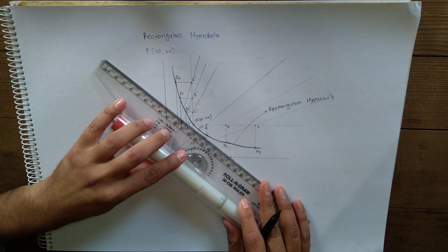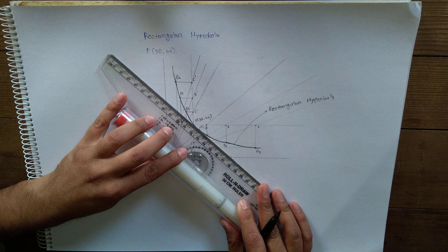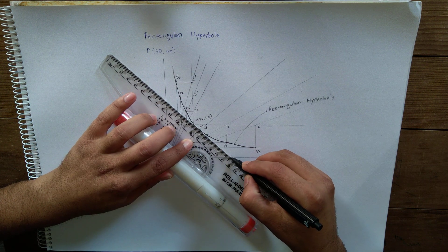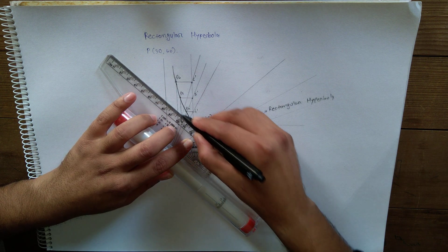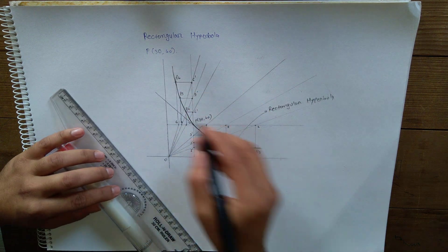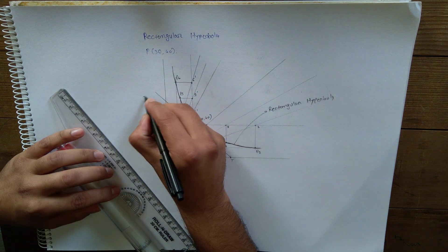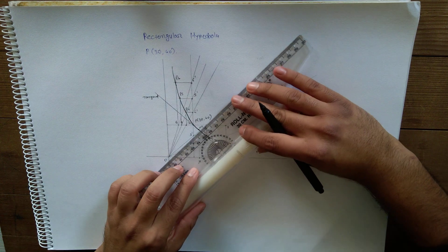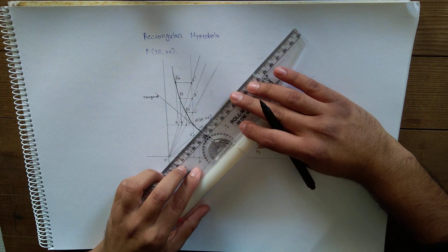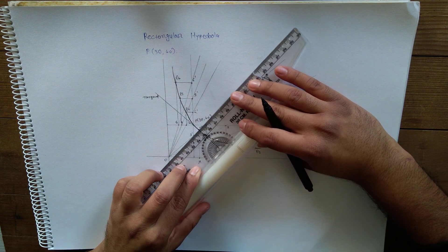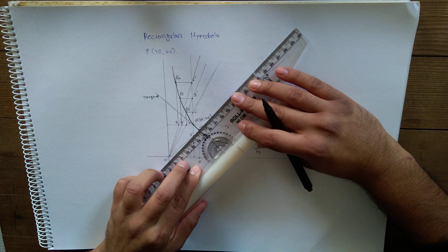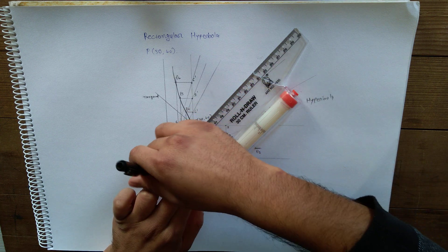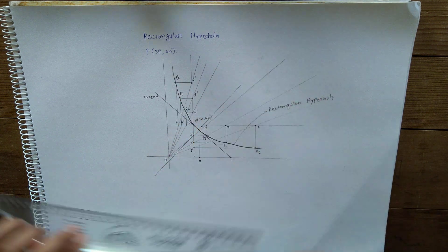Join T and M, which is tangent to hyperbola, and perpendicular to this line will give you normal to hyperbola at point M.